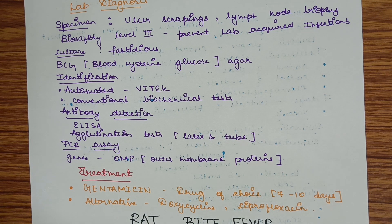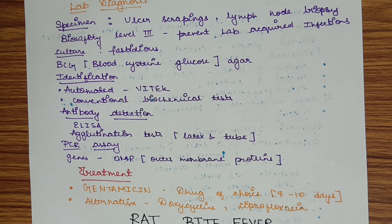The treatment of choice is gentamicin, given for 7 to 10 days, which is similar to plague treatment. Alternative drugs include doxycycline or ciprofloxacin.